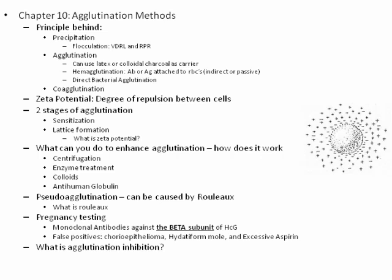Hemagglutination uses red blood cells, and we can also do direct bacterial agglutination. Coagglutination would use some type of carrier to attach the antibody. The definition of Zeta potential is definitely on your test — it's the degree of repulsion between those cells. The net negative charges are what keeps the cells from sticking together. To overcome the Zeta potential you can centrifuge, use enzymes, colloids, or anti-human globulin. The two stages of agglutination are: first stage sensitization, then lattice formation.